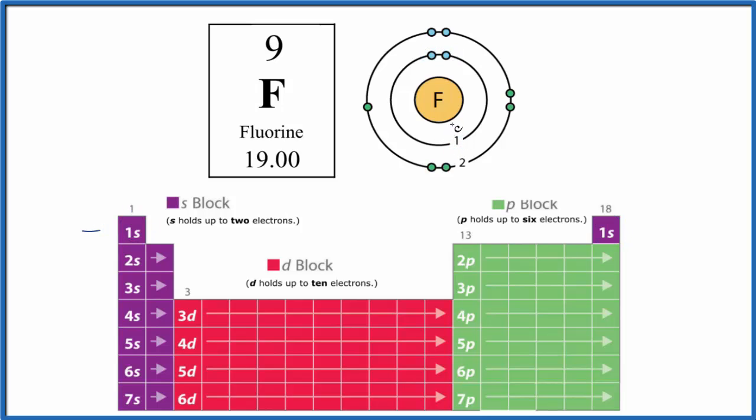So we need to go to the second energy level. That's right here, it's period 2. It can hold 1, 2, 3, 4, 5, 6, 7, 8 electrons. Remember, we only have a total of 9 electrons, and we just used 2. So we have 7 more electrons to put in the second energy level.